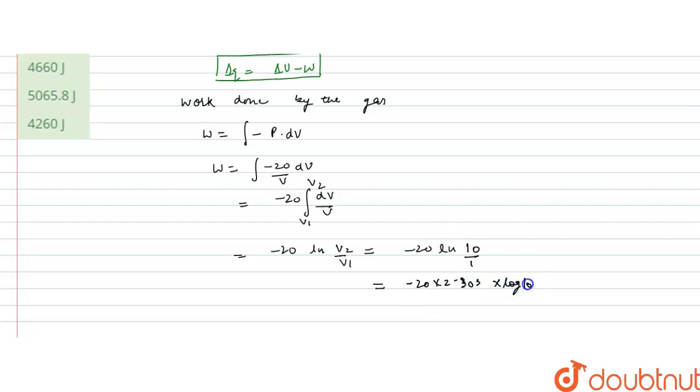This will be log 10 and log 10 value is 1. It will be log 10 minus log 1 and log 1 value is 0, so it will be 1 minus 0, that is 1, and this is equal to minus 20 into 2.303. So, this is minus 46.06 and this work done is in pressure into volume, so it will be in atmosphere litres.